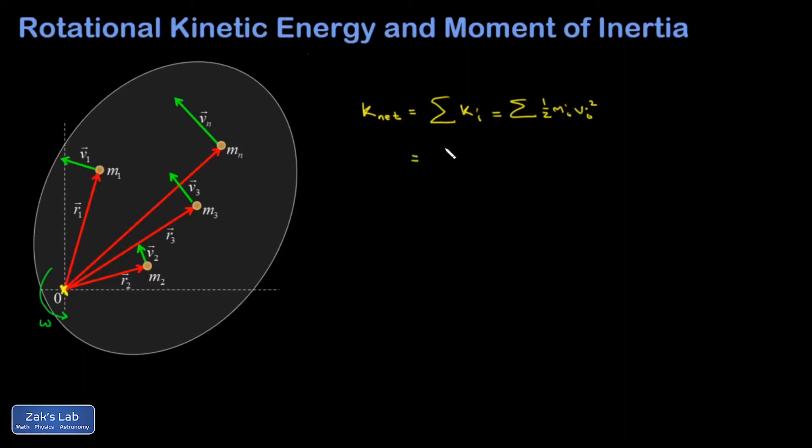But now I'm going to take advantage of the fact that every one of these little point masses has the same angular velocity. I'm going to replace v with r omega, and the r is the distance to the rotation axis. Those are different for each of the point masses, but they all have the same angular velocity.